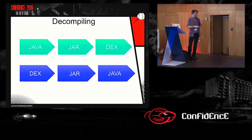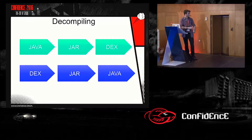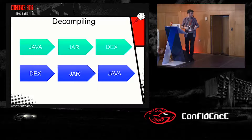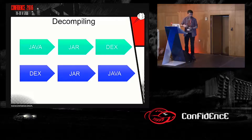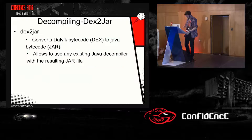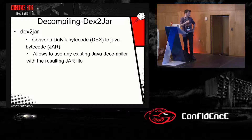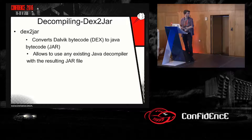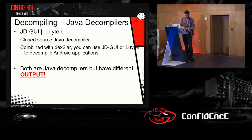For example, the decompiling process: when you are developing an Android application, you start with your Java source code, then use a Java compiler to create the JAR, and then with a Dalvik virtual machine compiler you create the DEX file — that's where all the source code lives. So starting from the DEX file in the APK, we need a DEX-to-JAR converter, and then a decompiler to get the Java source code for the application. One tool we can use to go from DEX to JAR is dex2jar, which converts all the Dalvik bytecode into Java bytecode, and combining it with JD-GUI or Jadx we can have the full decompiling process.